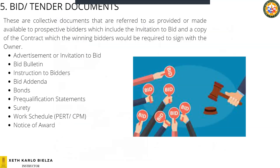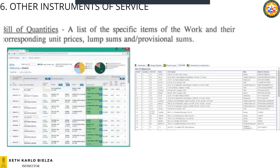Lastly, the bid and tender documents: these are collective documents referred to or made available to prospective bidders. They include the invitation to bid, a copy of the contract, the notice of award to the winning bidder, bulletins, addenda, bonds, surety, the work schedule, and the notice of award.